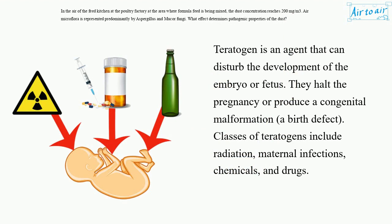A teratogen is an agent that can disturb the development of the embryo or fetus. They halt the pregnancy or produce a congenital malformation — a birth defect. Classes of teratogens include radiation, maternal infections, chemicals, and drugs.